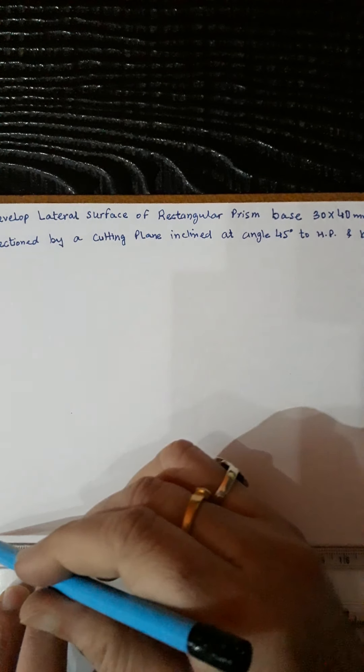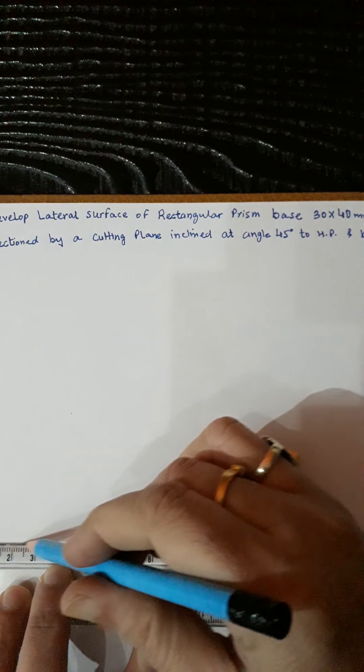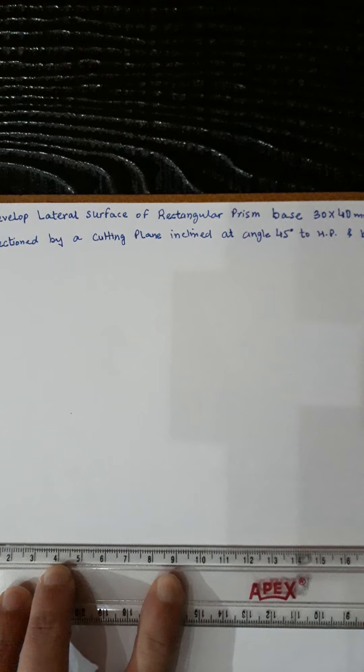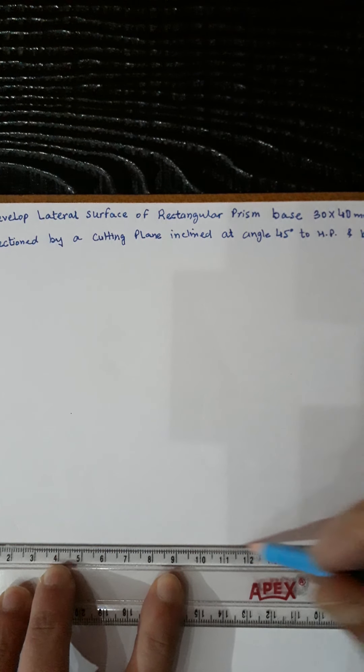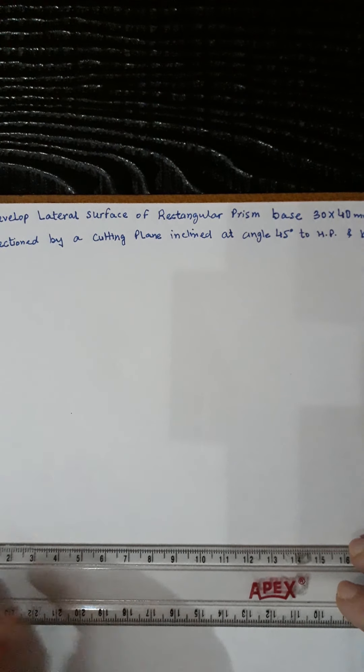Hello students, in this video I will discuss how to draw the development of a rectangular prism. The base size is 30 by 40 and the height is 70.